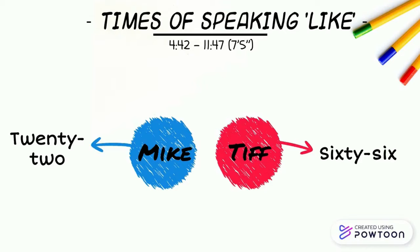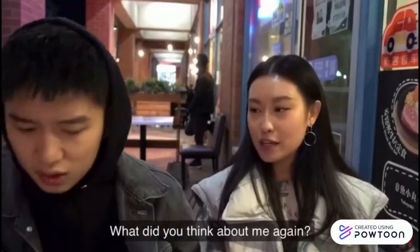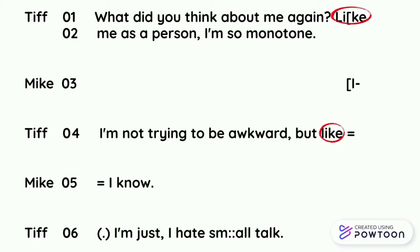So let's take a look at the first clip, and I will explain what role 'like' is playing in each sentence. In this clip, they are being asked what was initially attractive about each other, and they have this conversation. There are two instances of 'like' used. The function of the first 'like' is making focus on the phrase 'as a person.'